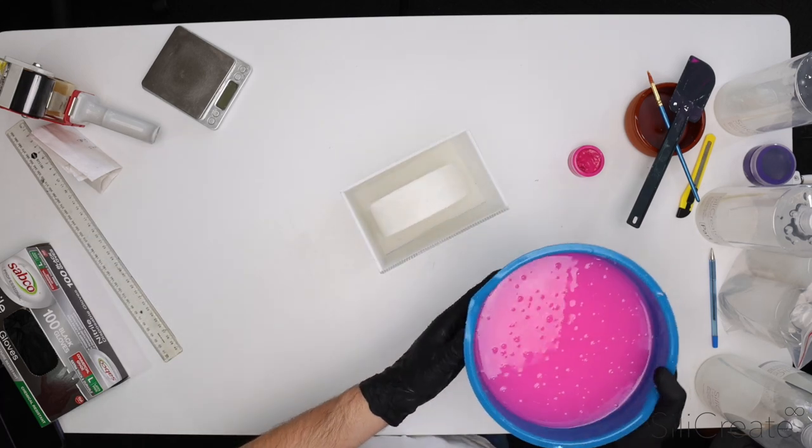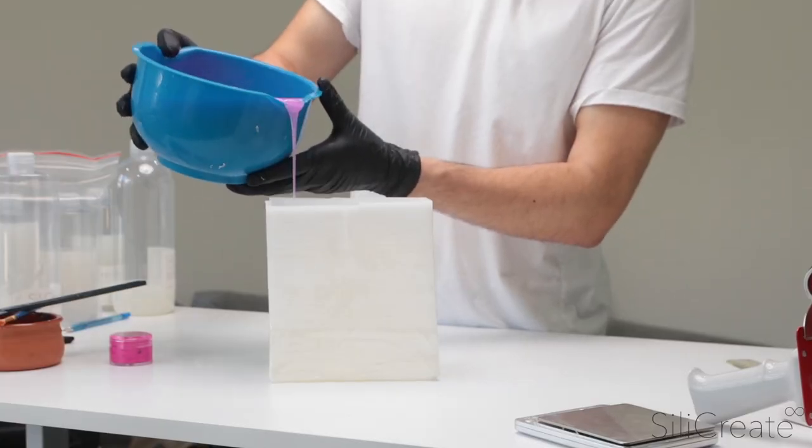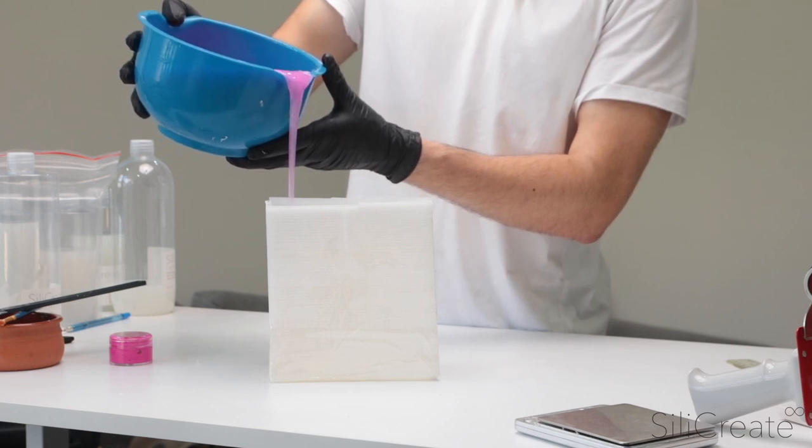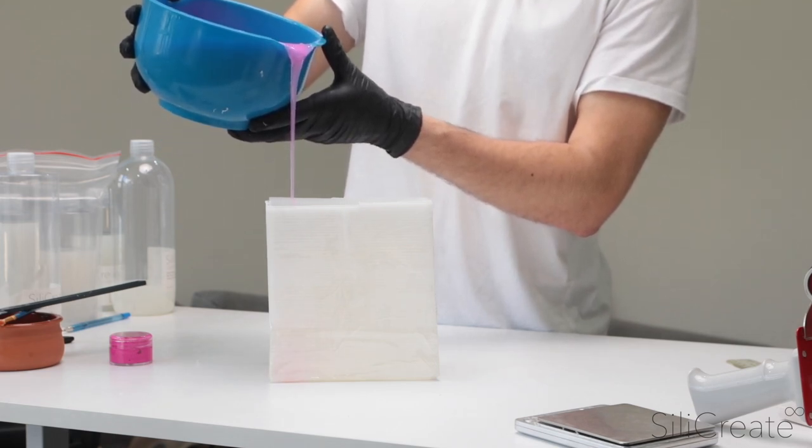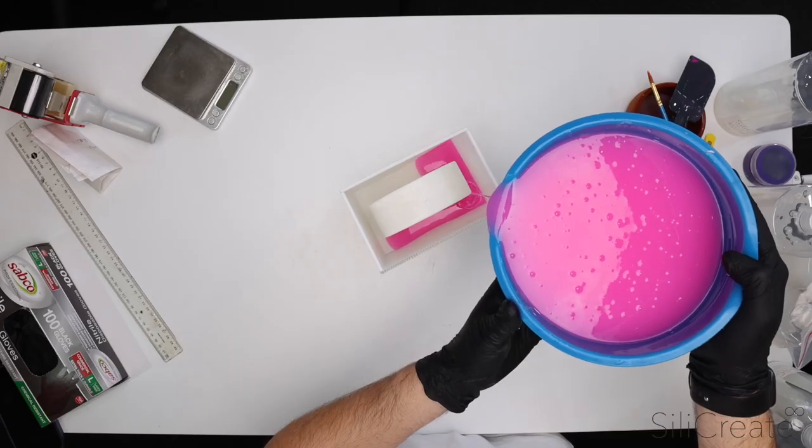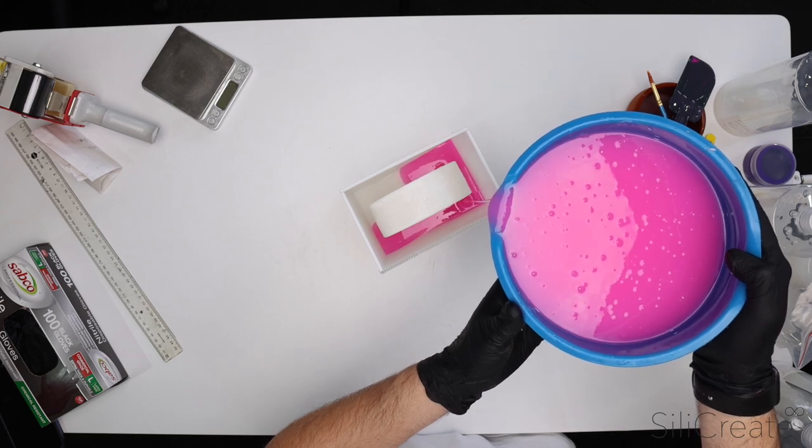What we want to do is pour in a thin, long stream, away from the main piece, to pull out any of the larger bubbles, which are the ones that cause issues. Pour it in now. In a nice, thin stream. And I can see the larger bubbles are getting popped on the way down.